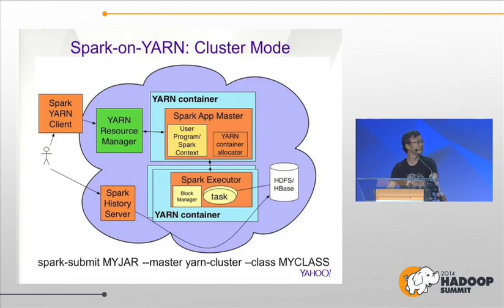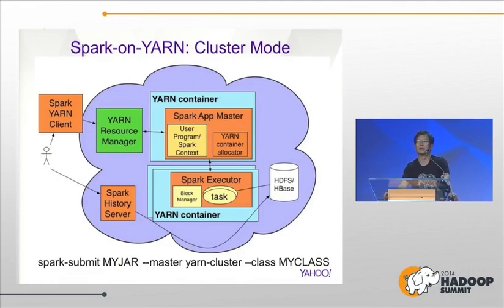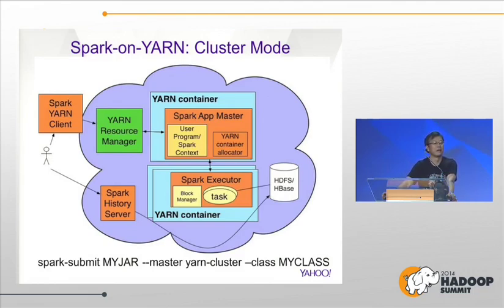That sounds complicated, but from the end user point of view, this is a single command line you need to run. Using the spark-submit command, you give it your Spark JAR file, tell it the main class you want executed, and because you want to run in cluster mode, you specify you are using YARN cluster. That's it — with that single line of code you are running your Spark application in your Hadoop cluster without needing to find machines or worry about all the details.